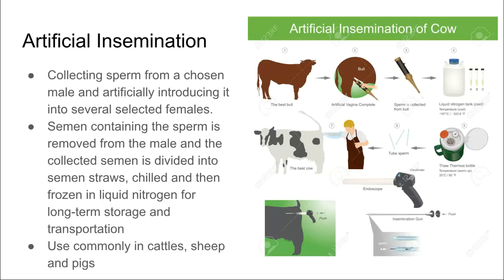We have to collect the semen from the male, and then we have to divide it into semen straws, chill them and freeze them in liquid nitrogen. Therefore, we can store them for long periods of time and transport them to wherever the female might be in order to inseminate her. This is a process most commonly used in cattle, sheep and pigs.